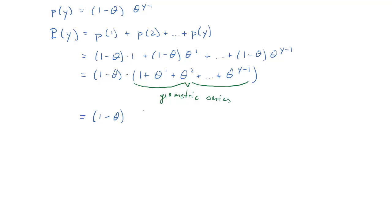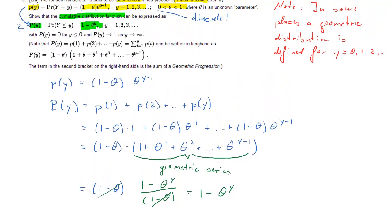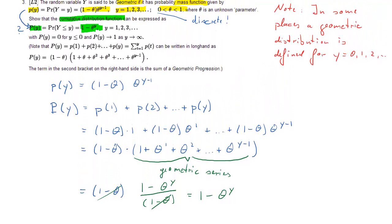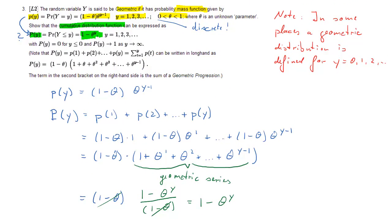So here that green part is exactly the same as 1 minus theta to the power of y divided by 1 minus theta. Then these 1 minus theta's cancel out and what we are left with is 1 minus theta to the y, which is exactly the solution we've already given. But now we know where it comes from. So we found the right solution.